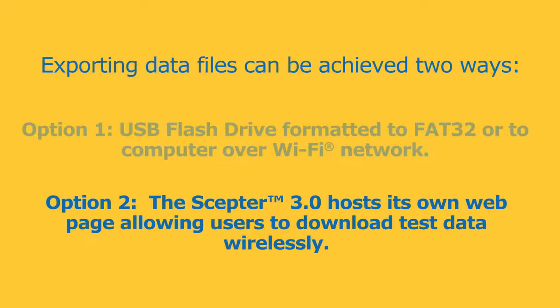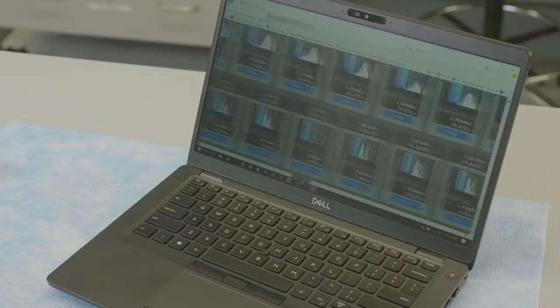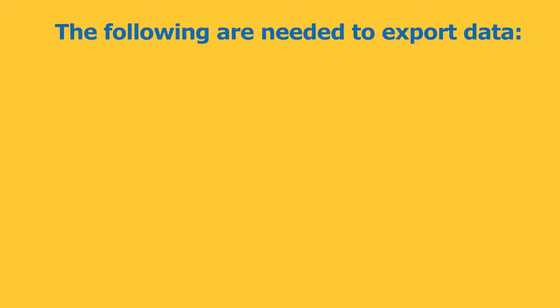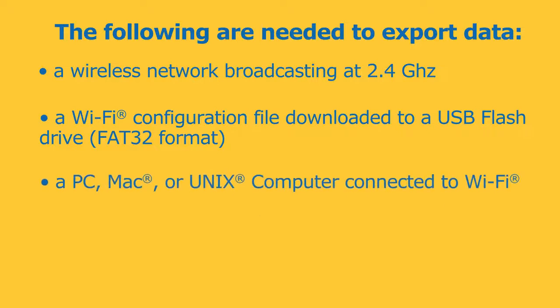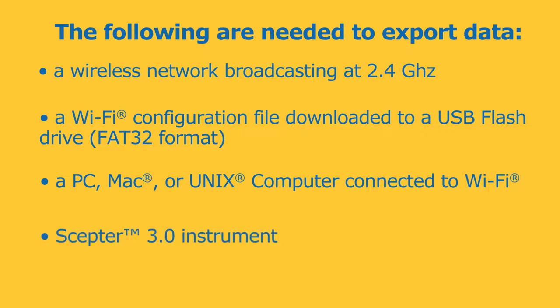Option two: the SEPTOR 3.0 hosts its own web page allowing users to download test data wirelessly. To export data, a wireless network broadcasting at 2.4 gigahertz, a Wi-Fi configuration file downloaded to a USB flash drive, a PC, Mac or Unix computer connected to a Wi-Fi network, and the SEPTOR 3.0 instrument are needed.